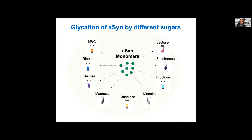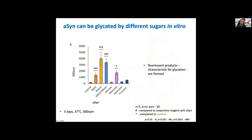We are now studying the glycation of alpha-synuclein by other sugars. We think methylglyoxal is interesting as a model agent, but there might be other sugars that are more physiologically relevant. We've been looking at ribose, glucose, manose, galactose, and other sugars, incubating alpha-synuclein in vitro with these sugars. Using a fluorescence-monitored reaction, we found that ribose glycates alpha-synuclein to an even higher extent than methylglyoxal, while glucose or galactose do not seem to be as potent in promoting the formation of these fluorescent products.